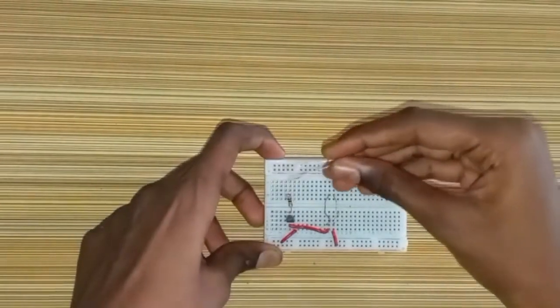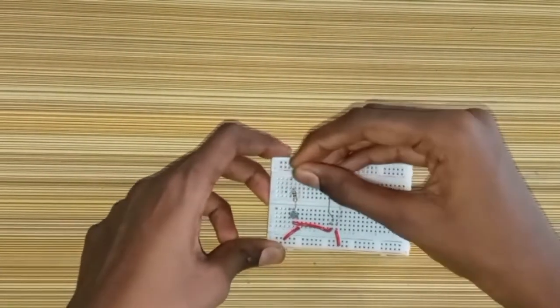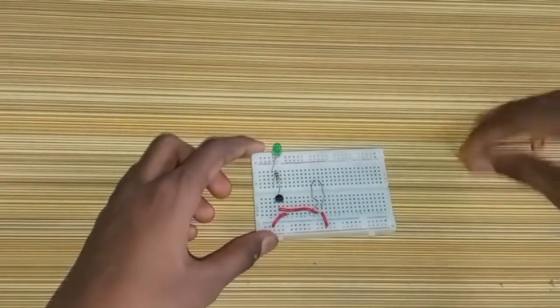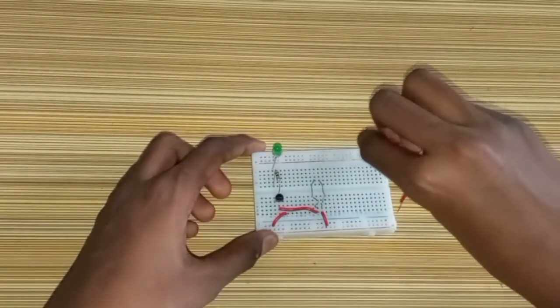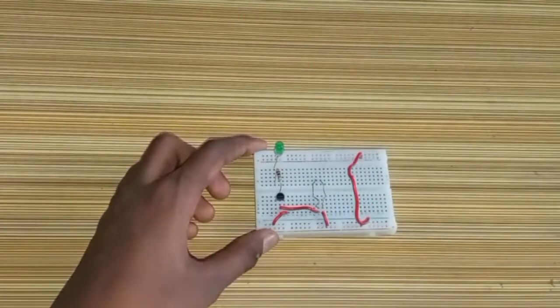Now take the anode of the LED and connect it to the positive terminal, and the cathode to the collector of the BC547 transistor. Now connect positive to positive terminal and negative to negative terminal on the breadboard.